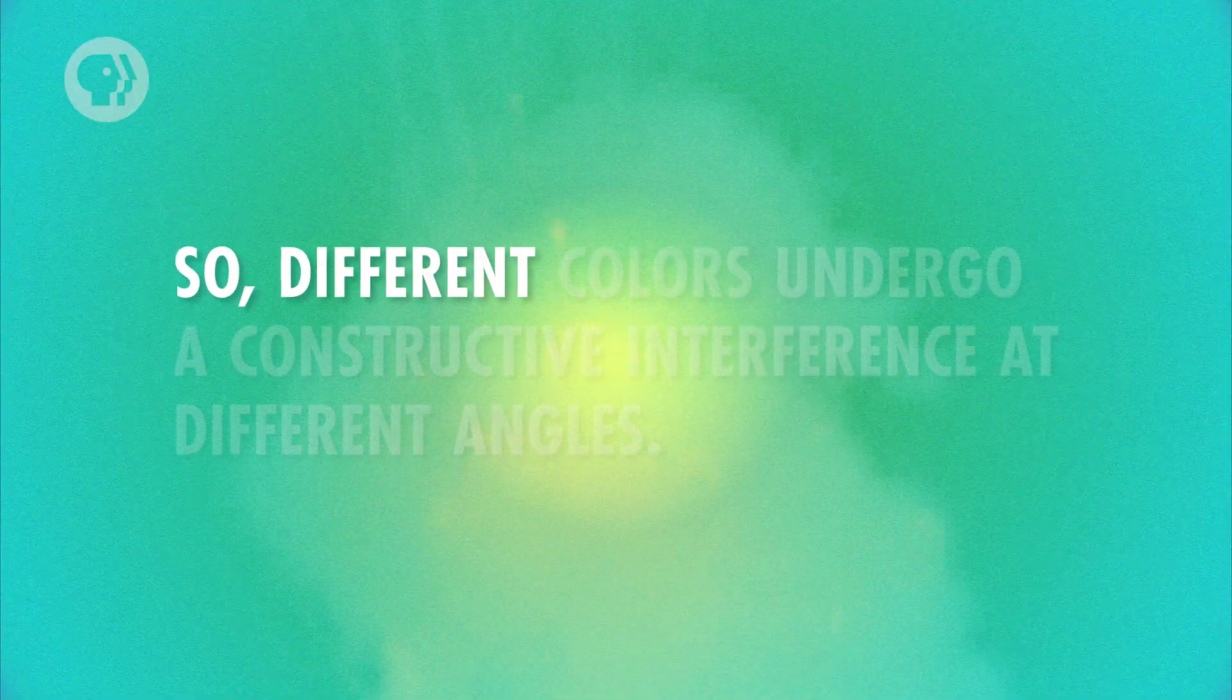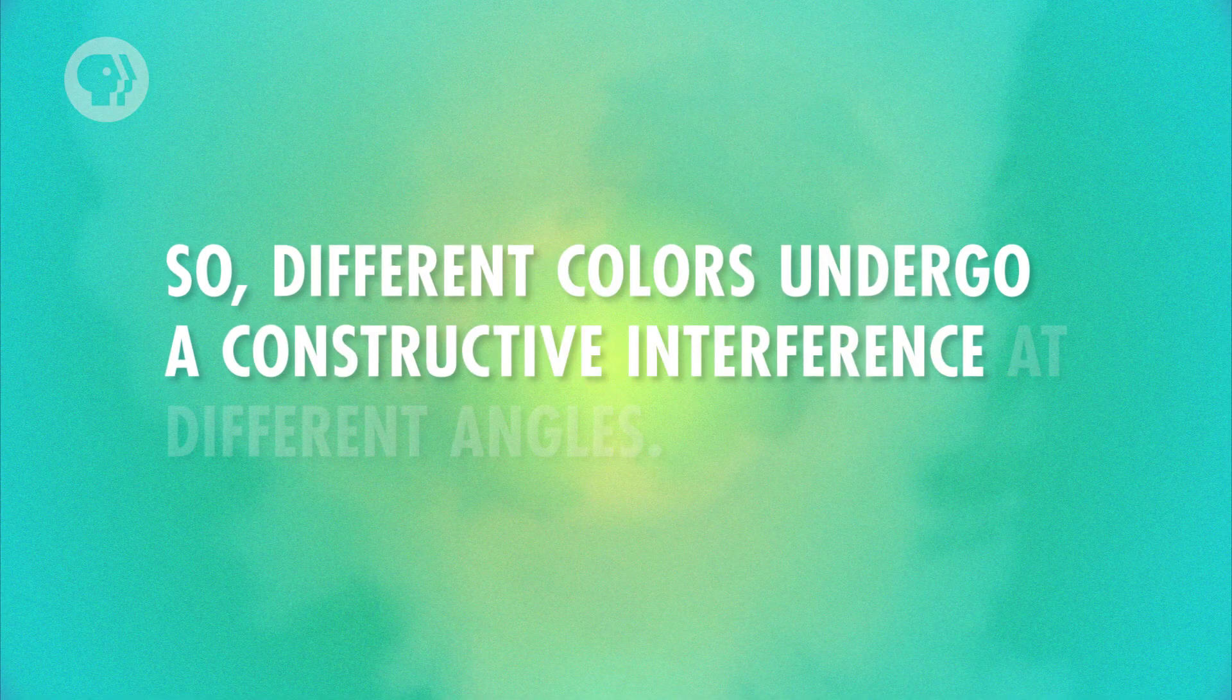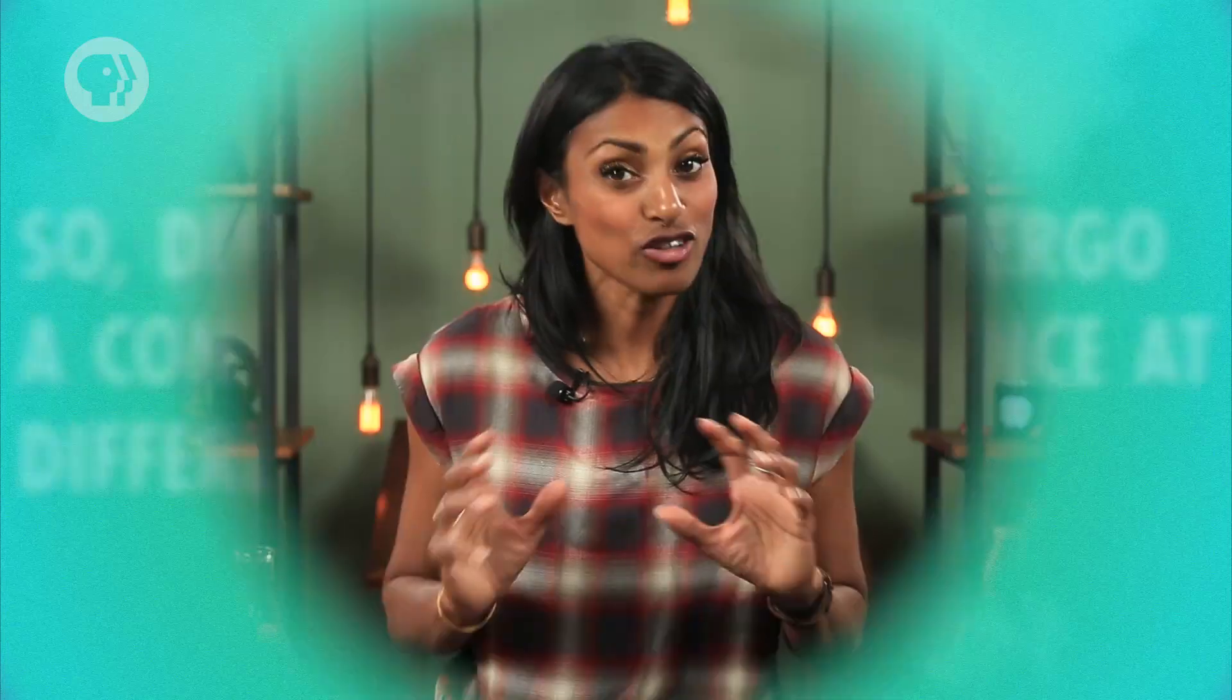Because as the viewing angle changes, so does the path length. So different colors undergo constructive interference at different angles. The result is an alternating pattern of colorful reflected light, and no reflection at all. Constructive interference creates a visible colored reflection, while destructive allows light to go through the oil to the water.